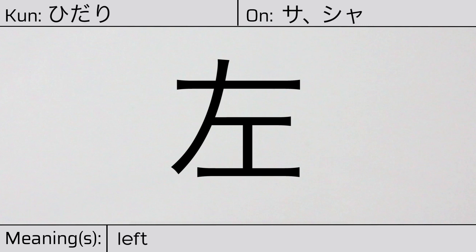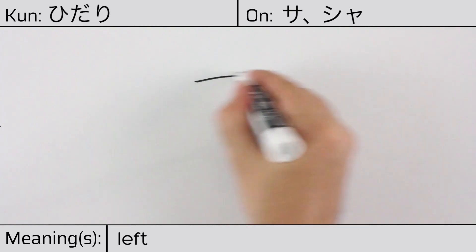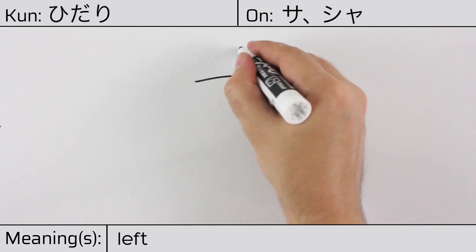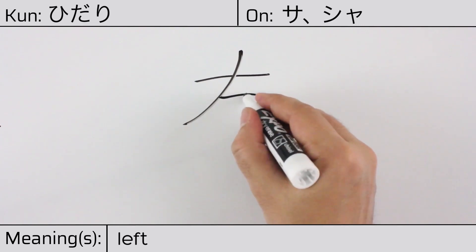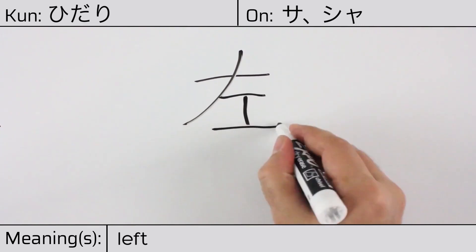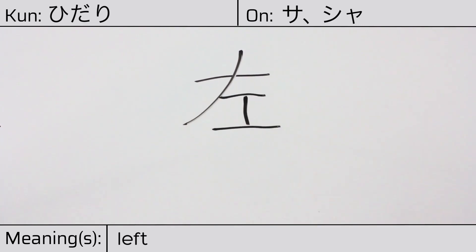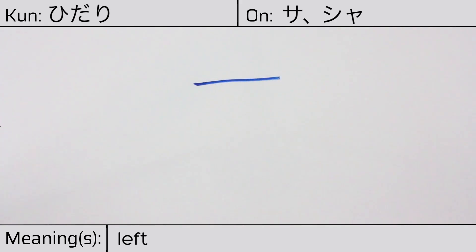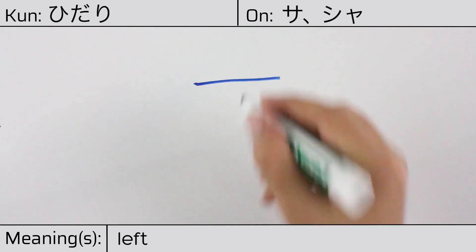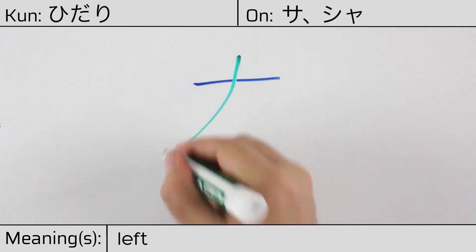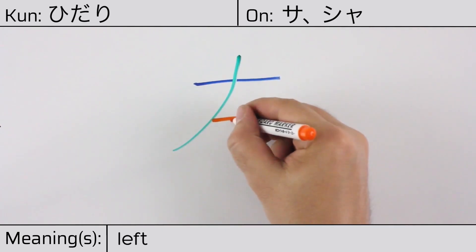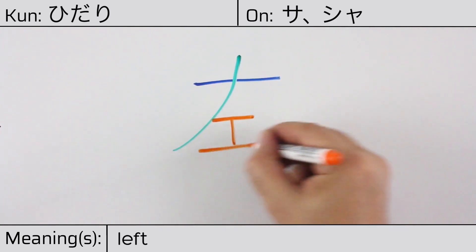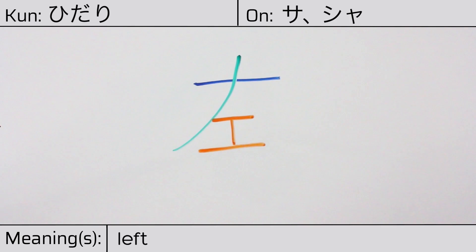Here is the stroke order: ichi, ni, san, shi, go. This character is made up of the following radicals or parts: ichi or kanji number one, katakana no, and this part meaning work, carpenter, or a skill.